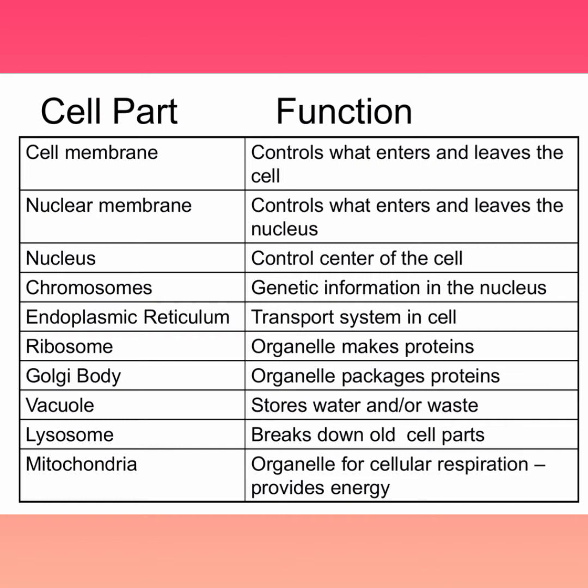In the structure you will see various membranes. There is an animal cell on the left-hand side and a plant cell on the right-hand side. As you can see, the various parts of the cell include: cell wall, cell membrane, nucleus, cytoplasm, mitochondria, ribosomes, centrioles, and rough endoplasmic reticulum.